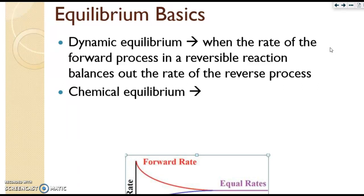Equilibrium Basics. Dynamic equilibrium is defined as the rate of the forward process in a reversible reaction, balancing out the rate of the reverse process. The word is equilibrium, so you see the word equal in that term. Chemical equilibrium is when the forward rate of reaction equals the reverse rate of reaction. Okay, so it's important that you know that general definition.